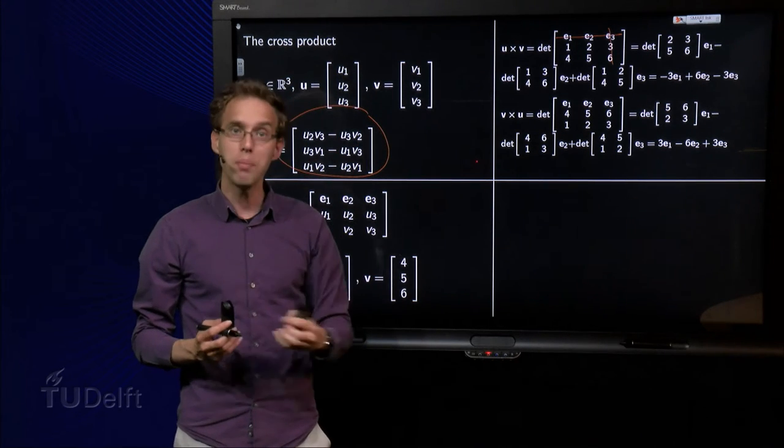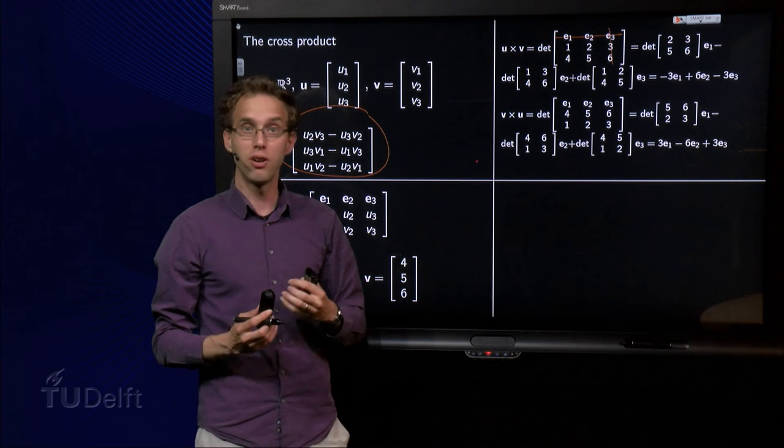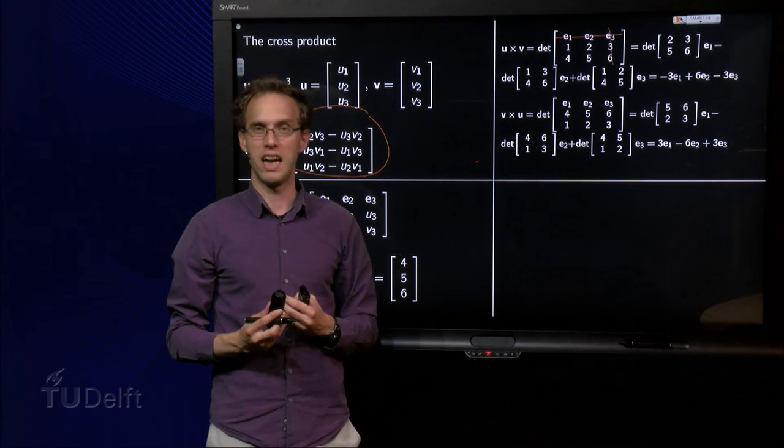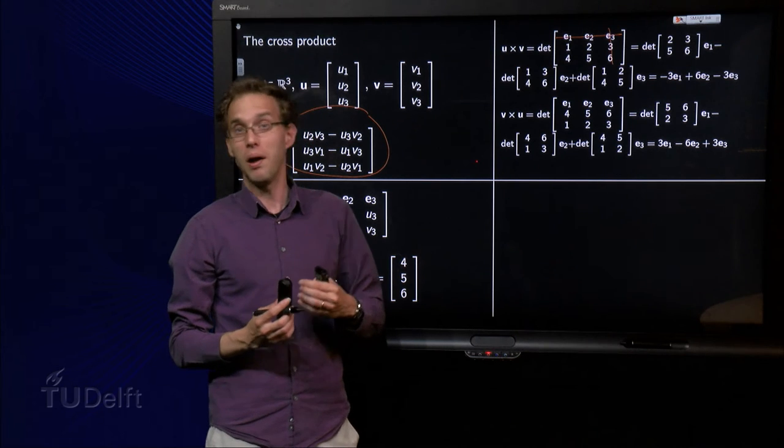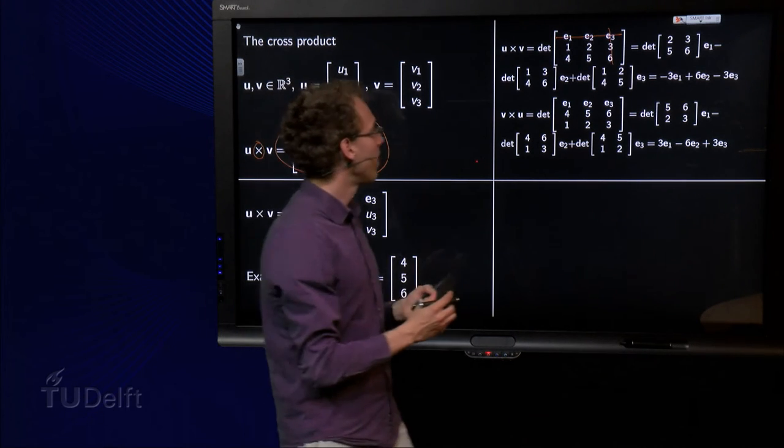What happens if we try to compute v cross u instead? That sounds a bit silly. Well, let's try. You never know, right?